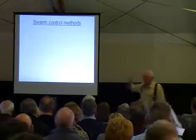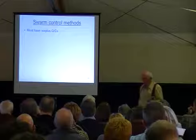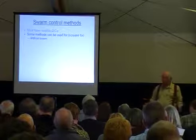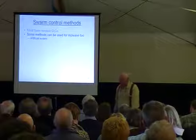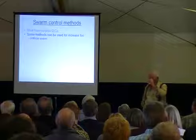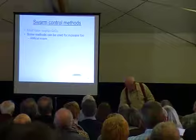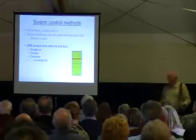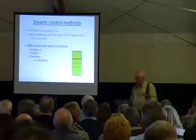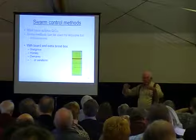You don't need any grafting or anything like that - because the bees are doing it. Now, swarm control methods. Most of them give you spare queen cells. Some methods you can use for increase, such as the artificial swarm. I've never ever used artificial swarm myself for the purposes it was intended, but it's a method that's very often taught and most people know it. There are some other methods where you use a board and an extra brood box - three names that come to mind are Snelgrove and Demaree. They don't work for everybody, but if you understand what's happening in the colony they should work reasonably efficiently.